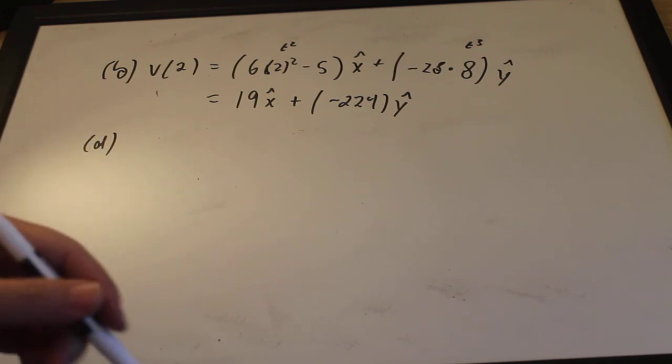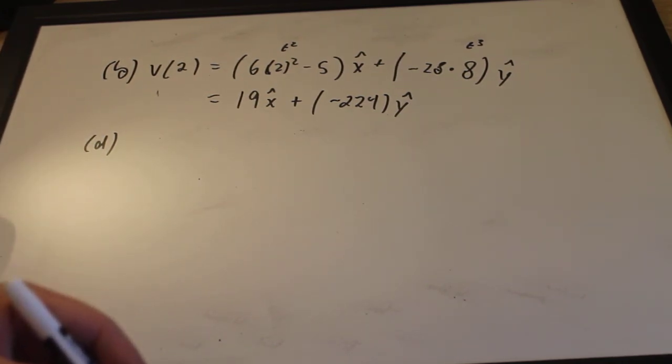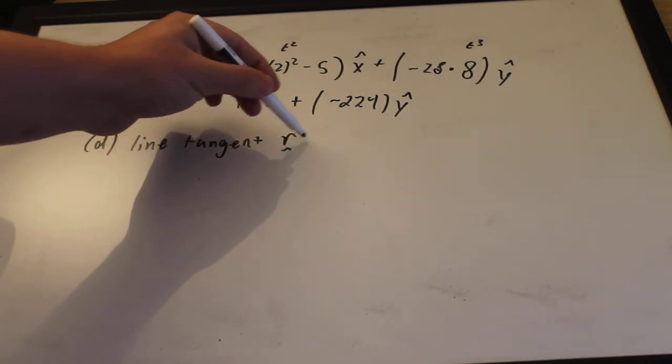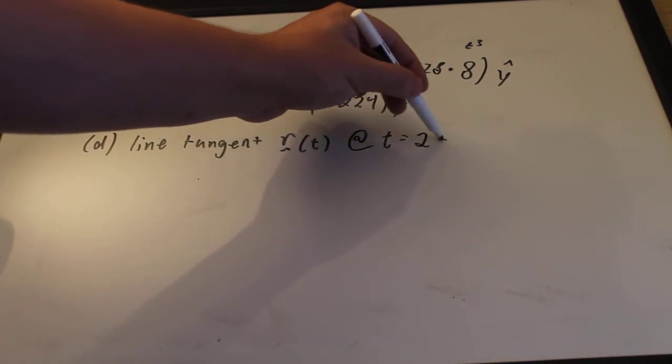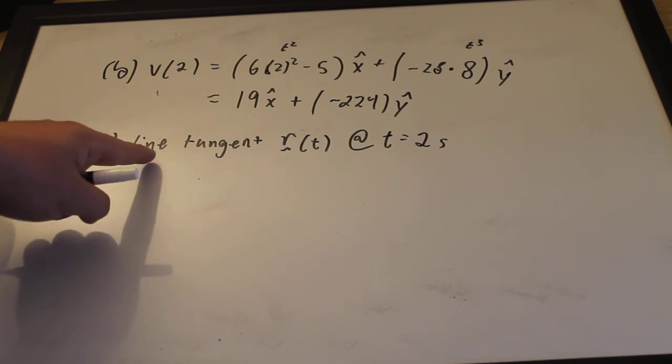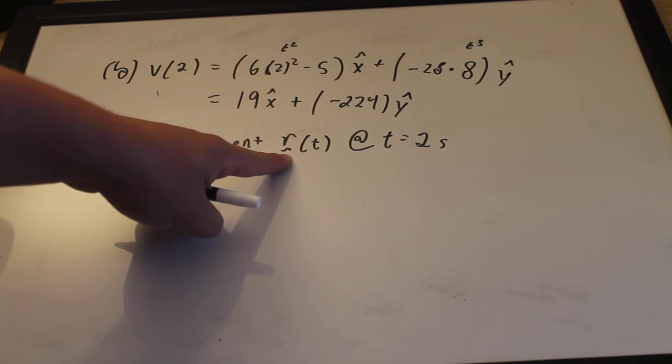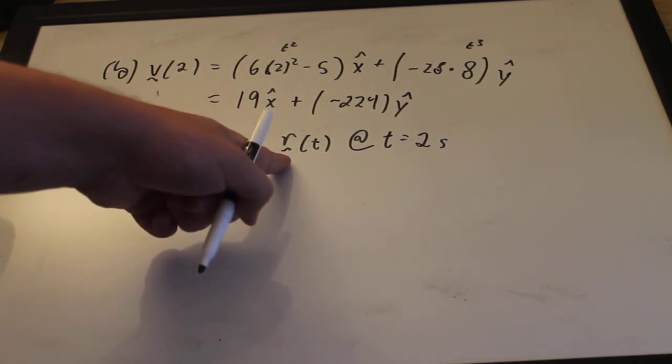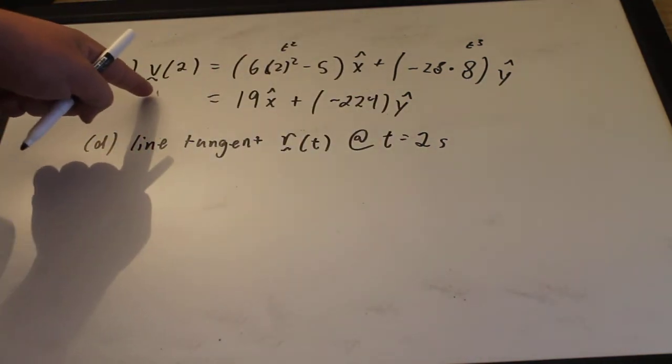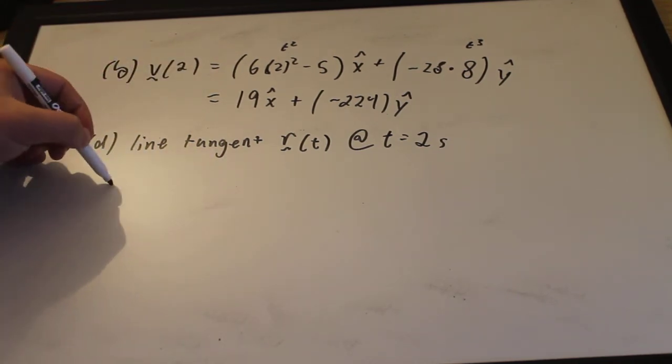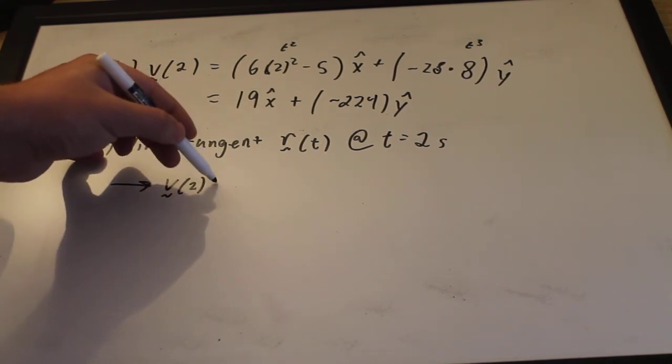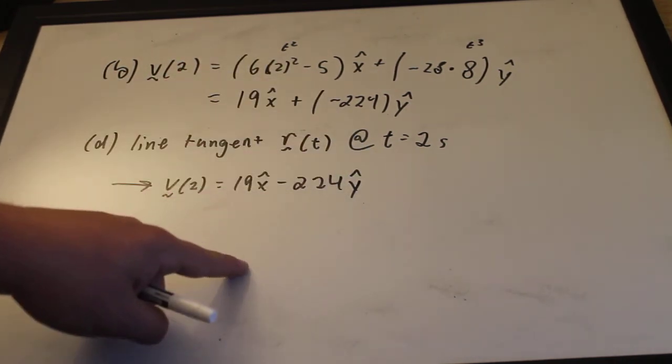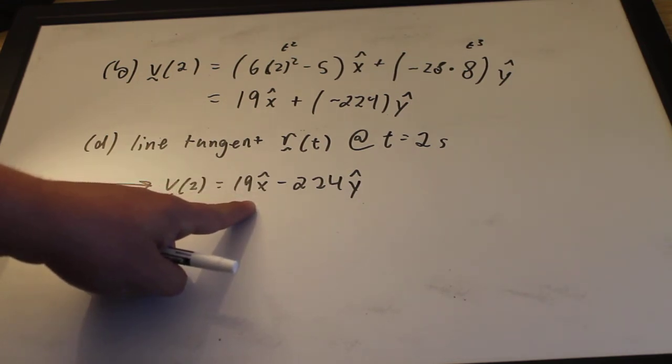Part D wants to know what is the angle between the positive direction of the x axis and a line tangent to the particle's path at t equals 2 seconds. Well, the vector tangent to r of t is just its derivative. And we already know what its derivative is. It's the velocity. So the vector tangent to r of t at t equals 2 seconds is going to be the velocity at t equals 2 seconds. So we have this vector v of 2 equals 19x minus 224y. This is tangent to r of t at t equals 2 seconds. So all we need to do is find the angle of this vector with respect to the positive x axis. And we have our solution.